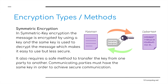There are two types of encryption methods mentioned in this syllabus, in the IGCSE. First of all, we've got symmetric encryption. All this means is it's one key — one key to encrypt it, and one key to decrypt it. In symmetric key encryption, the message is encrypted by using a key, and the same key is used to decrypt the message, which makes it easy to use but less secure. It also requires a safe method to transfer the key from one party to another. Communicating parties must have the same key in order to achieve secure communications.